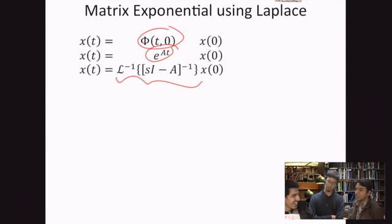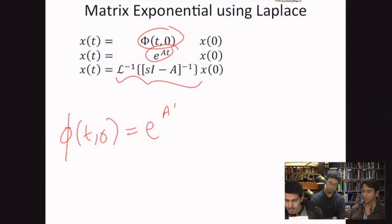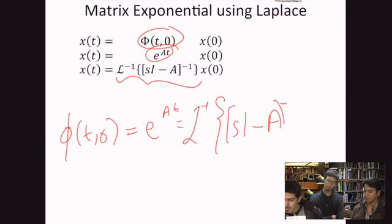Oh. That makes sense. Yeah. So, we can write phi of t,0 is equal to e power At is equal to Laplace inverse of (sI minus A) inverse. See? Easy peasy.